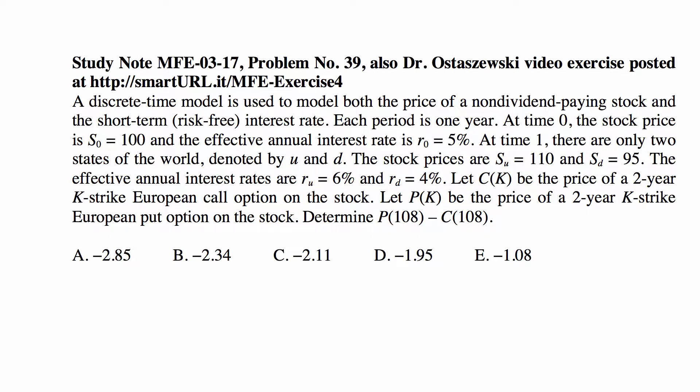At time zero the stock price is S_0 = 100 and the effective annual interest rate is r_0 = 5%. Notice this is the effective annual interest rate, it's not the force of interest. At time one there are only two states of the world denoted by u and d. The stock prices are S_u = 110 and S_d = 95.